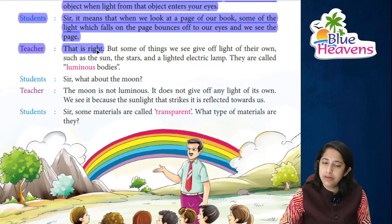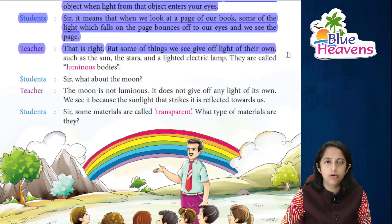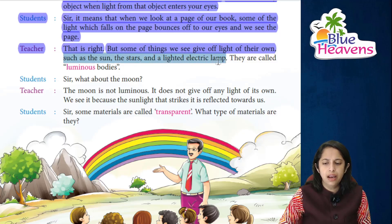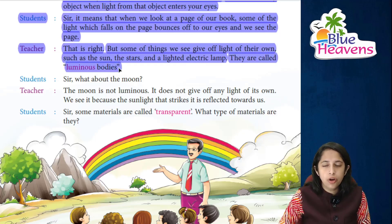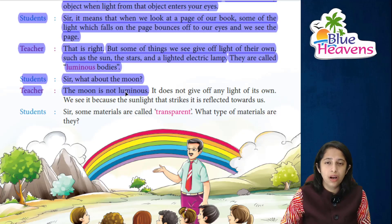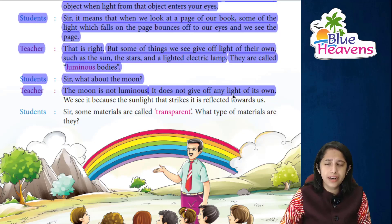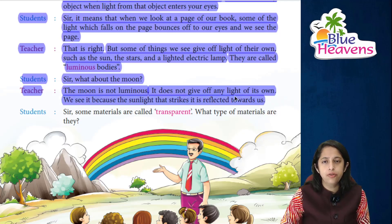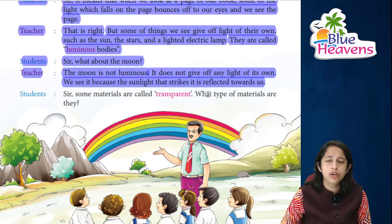The teacher confirms: that's right. But some things emit light on their own — such as the sun, stars, and a lighted electric lamp. These are called luminous bodies because they emit light from their surfaces. Students ask: what about the moon? The teacher explains: the moon is not luminous because it's a natural satellite — it does not have its own light. It takes light from the sun and reflects it towards us.